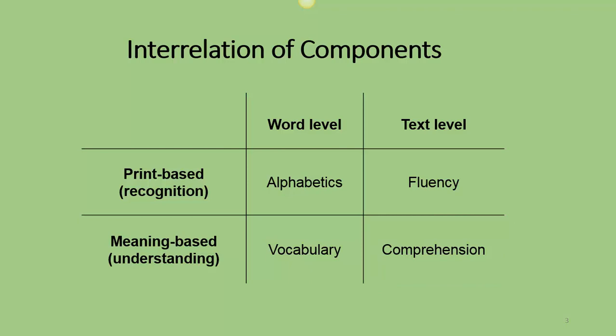Readers must rely on alphabetic knowledge and decoding skills to be able to read unfamiliar words. Without that, they won't be able to decode in order to read fluently. And without fluency, readers will spend so much time trying to recognize individual words before they can read fluently.